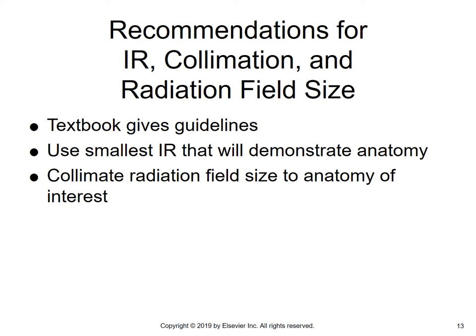The textbook gives recommendations for IR collimation and radiation field size. We always use the smallest IR that will demonstrate the anatomy — for example, if you're doing a baby that can fit on an 8x10, there's no reason to use a 14x17. For adults, you're going to use 14x17 inch IRs. Collimate the radiation field size to the anatomy of interest.